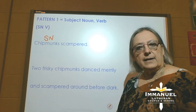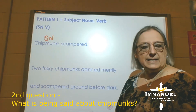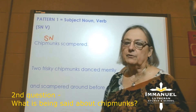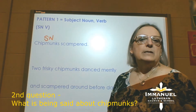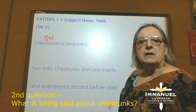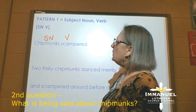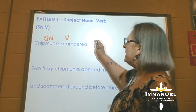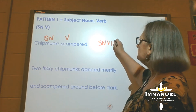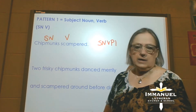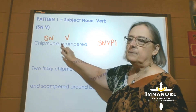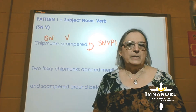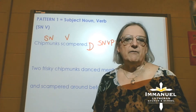The second question then always asked is, what is being said about chipmunks? And when we answer that, we say chipmunks scampered — verb. We have no other words in this very short sentence. So we say subject noun, verb, pattern one, and we would write the pattern. Check — we'd go back and make sure everything is marked. Period. Statement. Declarative sentence. And we are done. So that's the very basic skeleton of pattern one.